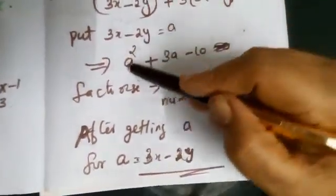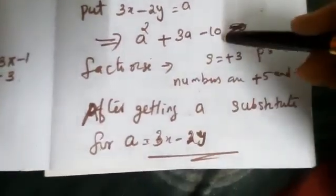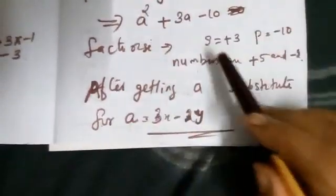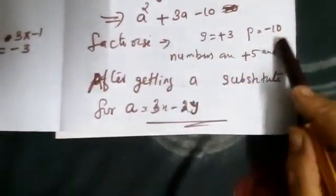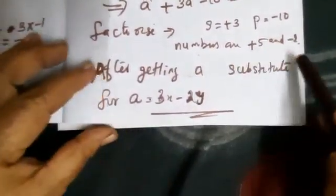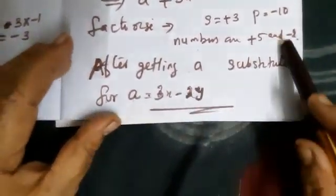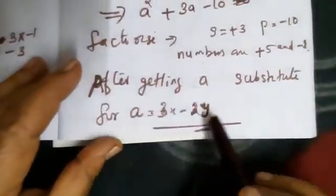So this equation becomes a²+3a-10. Then factorize. Here sum equals +3, product equals -10. So the numbers are +5 and -2. After getting a, substitute for a = 3x-2y.